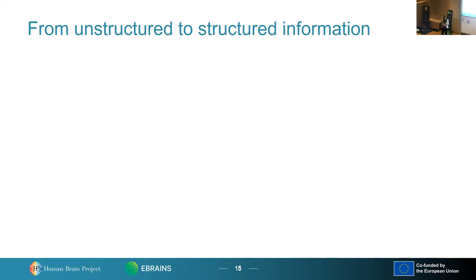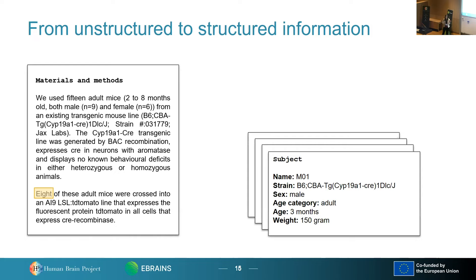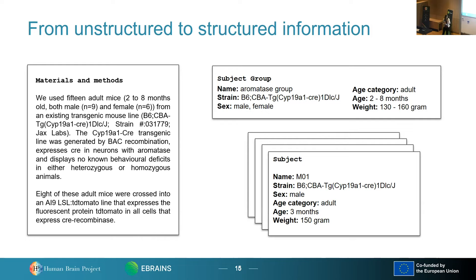So what does it actually mean to go from unstructured to structured information? A lot of valuable information is available in the materials and methods section of a paper. For example, in this example we see they used 15 adult mice, two to eight months old, both male and female, and a particular strain. But then if you keep reading, you see that actually they used eight of these adult mice with a different genotype — all the information is there, but it's not easily parsed. So we convert these highlighted elements into cards per subject in which all the information is summarized. You can do that per subject and also per subject group, and then you can easily say we have one group of seven with this genotype and one group of eight with the other genotype.